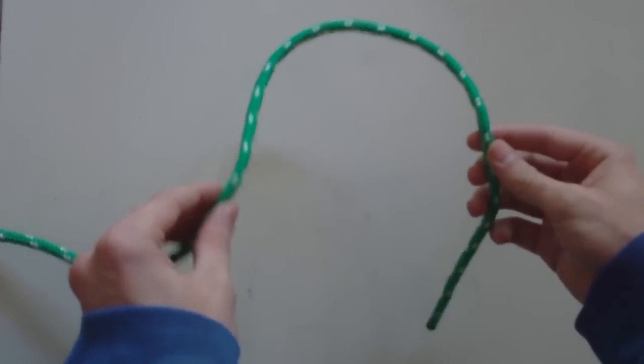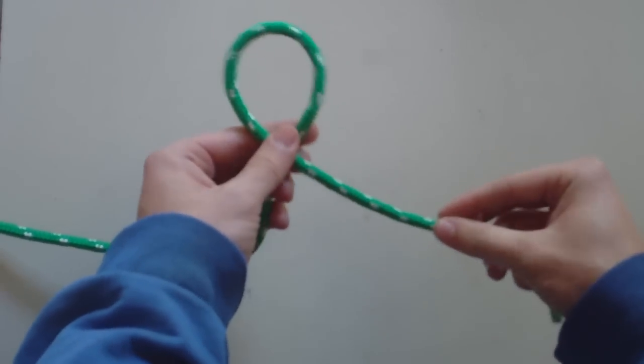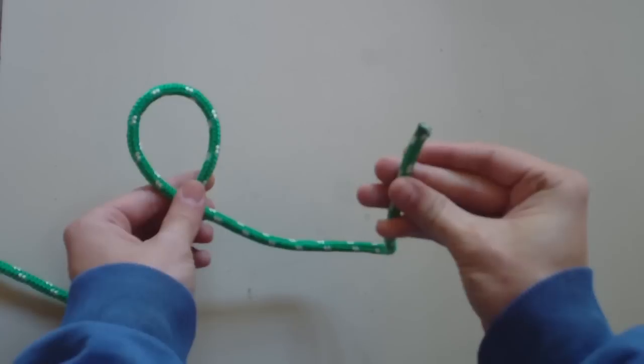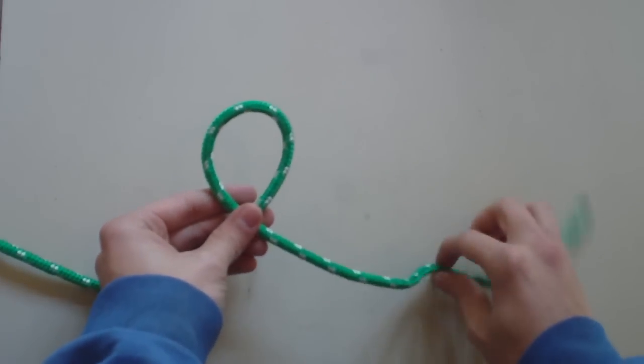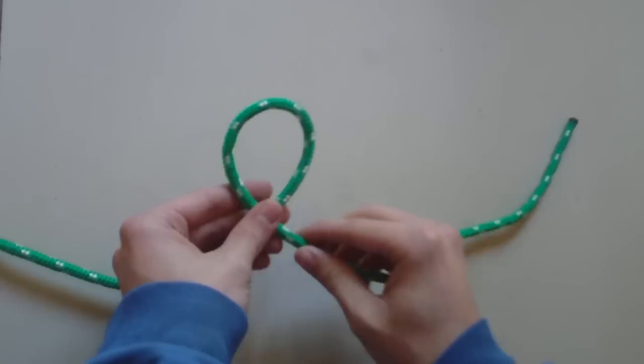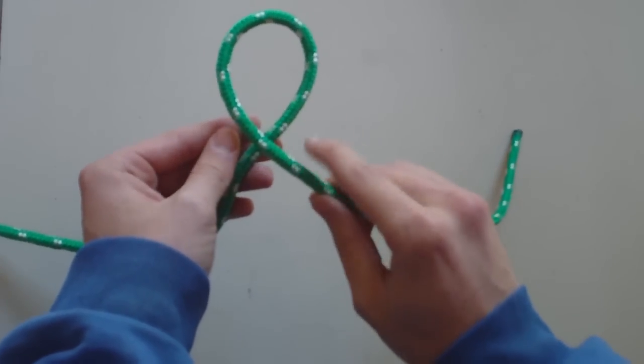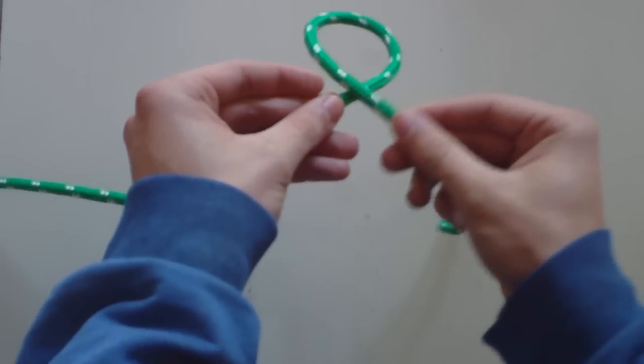So to start this knot, we're going to create a loop like this. Here is the running end. I need to give more rope. Notice that the running end is passed over the standing part, like this.